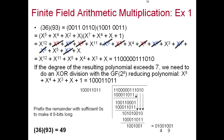Now let's do multiplication in GF(2^8), using the same values 36 and 93. We write them as polynomials and perform term-by-term multiplication: for example, x^5 × x^7 = x^12, x^5 × x^4 = x^9, and so on. After expanding all products, any repeated terms cancel out by XOR, leaving us with x^12 + x^11 + x^5 + x^4 + x^3 + x.